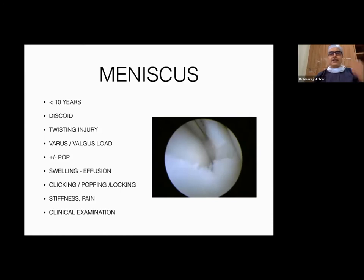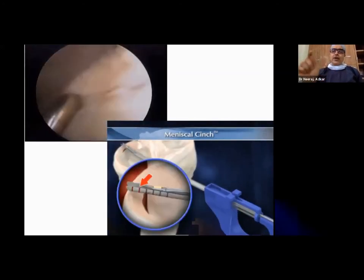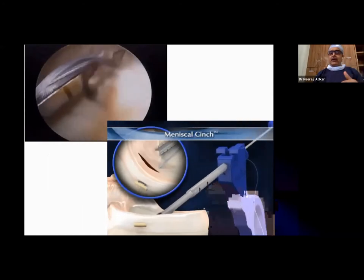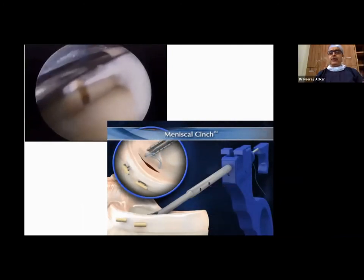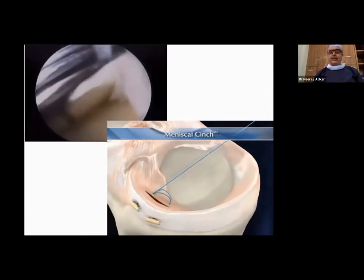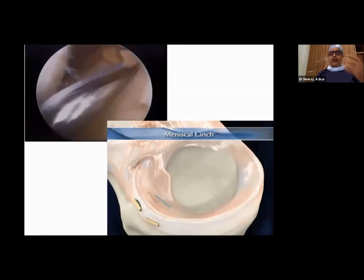A displaced meniscus causes severe pain, locking sensation, and difficulty in walking and doing day-to-day activities. Earlier we used to remove the meniscus, but nowadays we can repair it arthroscopically through a five-millimeter portal. As shown in this animated video, when we pull the thread it gets locked and the meniscus is approximated nicely. Knee bending and movement are allowed the very next day after this procedure, with a maximum hospital stay of just 24 hours.